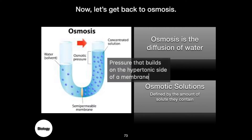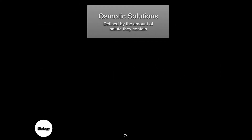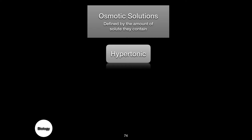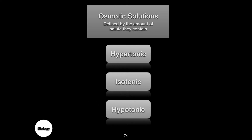Hypertonic means a higher solute concentration. Iso means equal, so isotonic means equal concentration — the same concentration on both sides of the semipermeable membrane. And then we have hypotonic again: hypo means under or below, indicating a lower solute concentration. Let's take a look at what this means when talking about living cells.